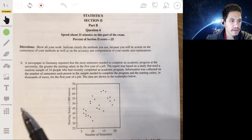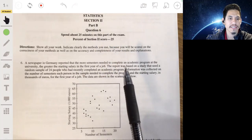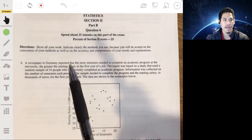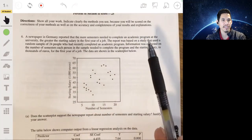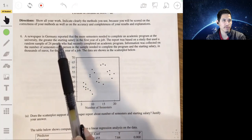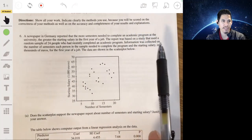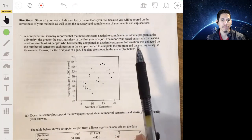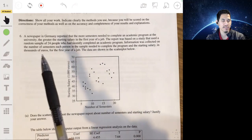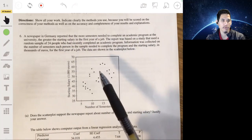All right, problem six. We have a newspaper in Germany that reported that the more semesters needed to complete an academic program at the university, the greater the starting salary in the first year of the job. The report was based on a study that used a random sample of 24 people who had recently completed an academic program. Information was collected on the number of semesters each person in the sample needed to complete the program and the starting salary in thousands of euros for the first year of the job.